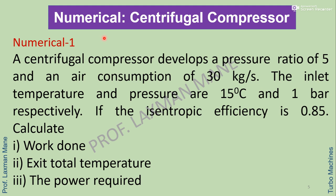Now we will discuss numericals on centrifugal compressors. First numerical: a centrifugal compressor develops a pressure ratio of 5 and an air consumption of 30 kg per second. The inlet temperature and pressure are 15 degrees Celsius and 1 bar respectively. If the isentropic efficiency is 0.85, calculate work done, exit total temperature, and power required.